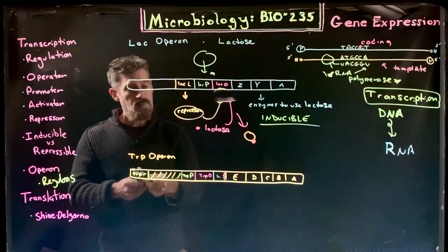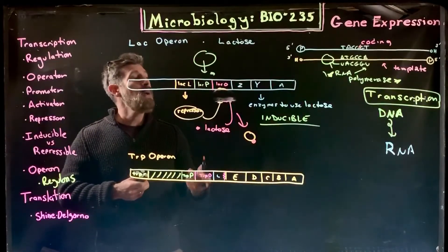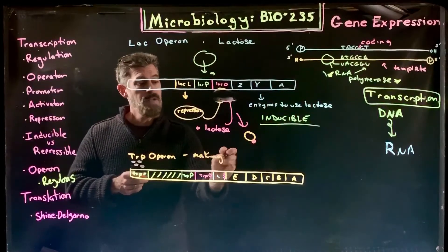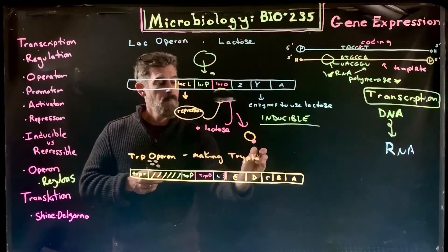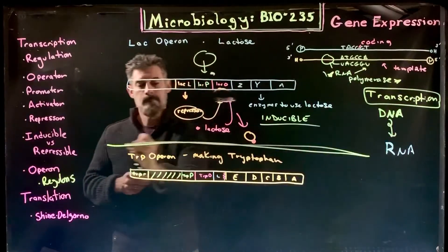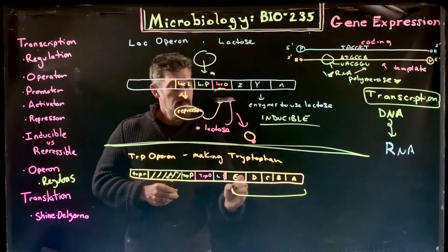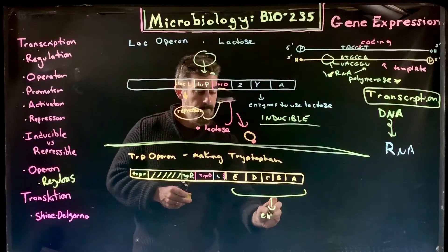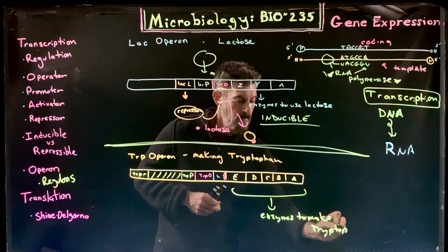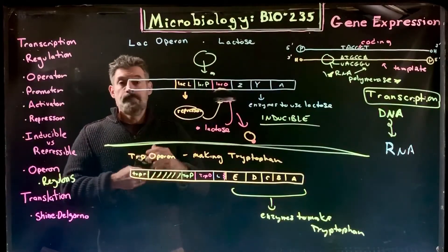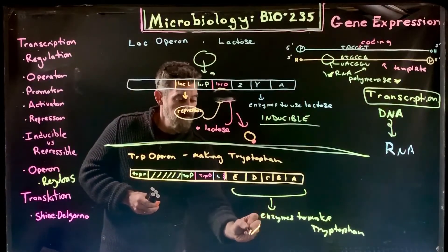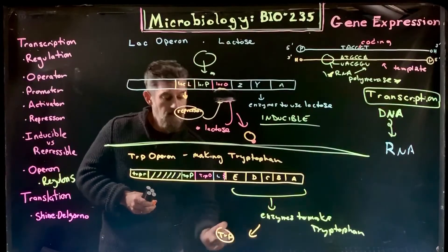Cells also have to acquire certain amino acids from the environment, and some they can make themselves. A TRP operon is for making the amino acid tryptophan. These are all enzymes needed to make tryptophan. They're typically expressed all the time, making tryptophan, which the cell then uses.